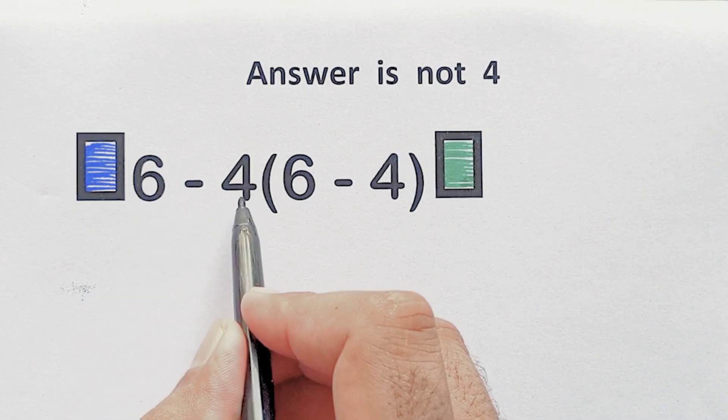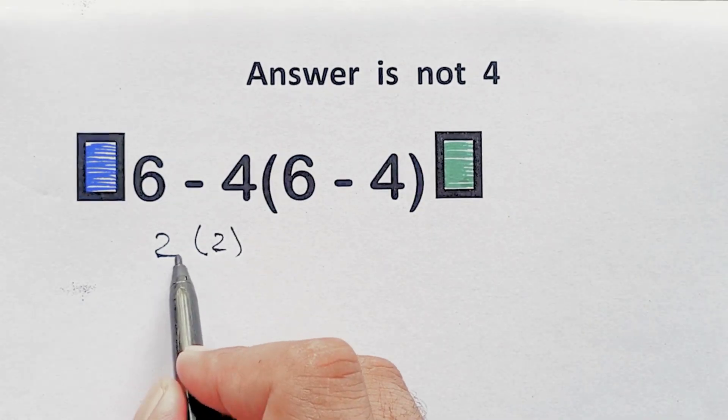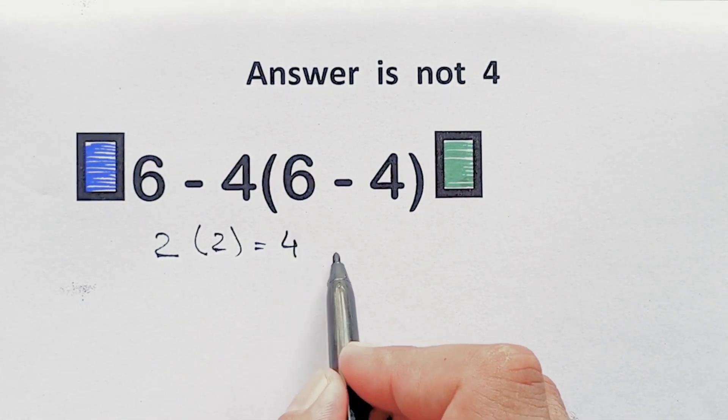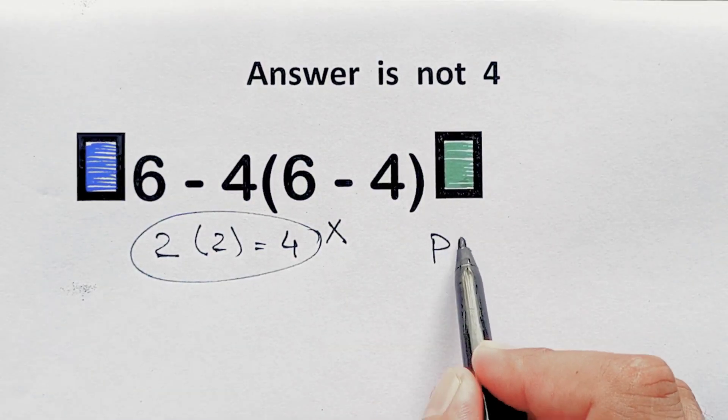Most people follow this method like six minus four is two, and same like two again, and two times two gives us four. But this answer is not correct, because according to the order of operations,